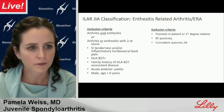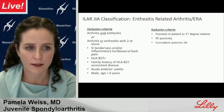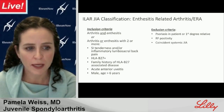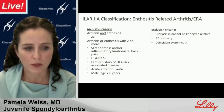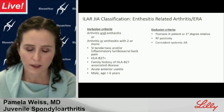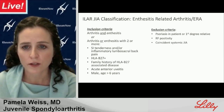To meet criteria for ERA, children must have arthritis and enthesitis, or either arthritis or enthesitis with at least two of the following: sacroiliac joint tenderness and/or inflammatory lumbar sacral back pain, HLA-B27 positivity, a family history of HLA-B27-associated disease, or acute anterior uveitis — and the child must be a boy older than six. Exclusion criteria include psoriasis in the patient or a first-degree relative, RF positivity, or coincident systemic JIA.